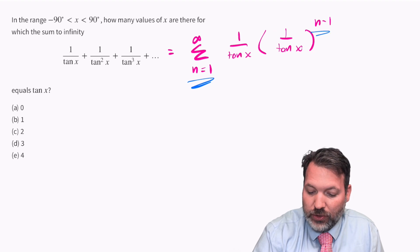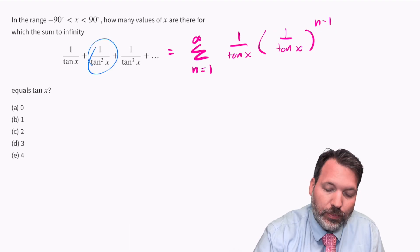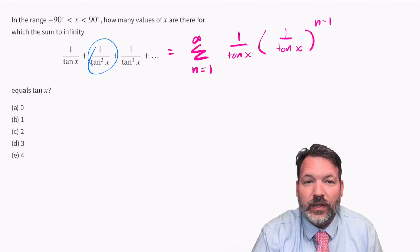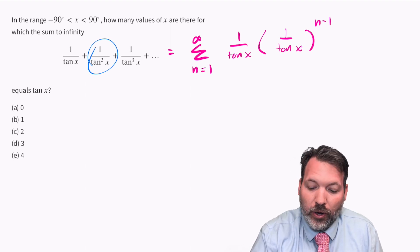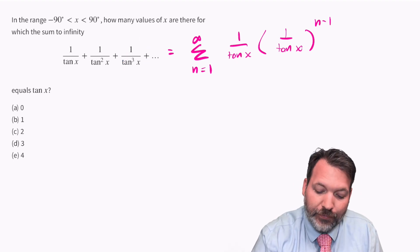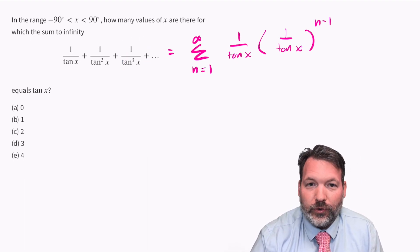But then when n is two, we do two minus one is one and we multiply that initial value by one copy of our ratio, which again, in this case is the very same 1 over tangent x. And then for the third time, we multiply by two copies and the fourth time we multiply by three copies on and on forever.